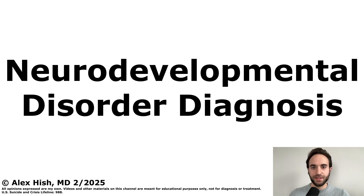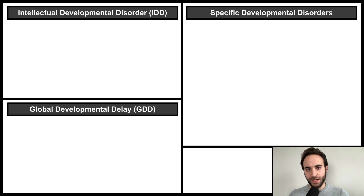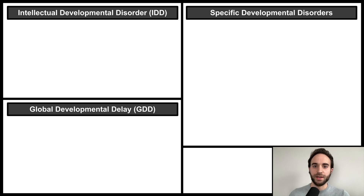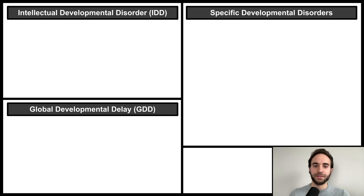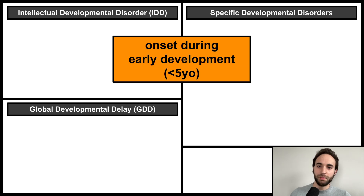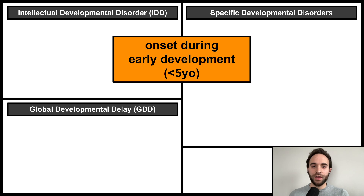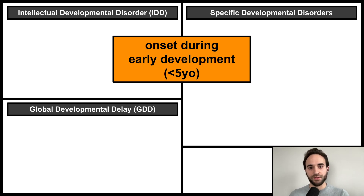This talk is an overview of the diagnosis of neurodevelopmental disorders. It will review the diagnoses in the DSM chapter titled Neurodevelopmental Disorders, with visual organizers and mnemonics to help you remember the criteria. Specifically, we'll review intellectual developmental disorder, global developmental delay, and the specific developmental disorders. Since these are developmental disorders, they all have onset during early development, which generally refers to the first five years of life.